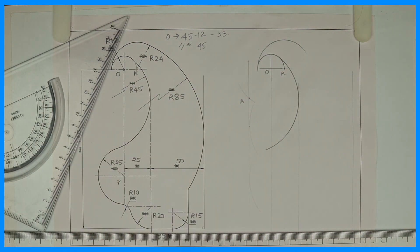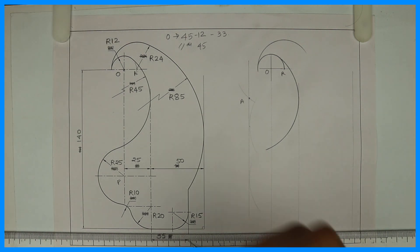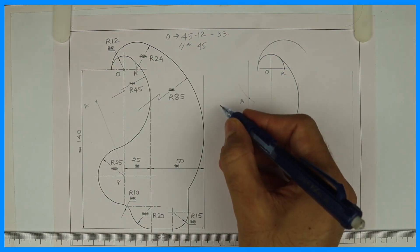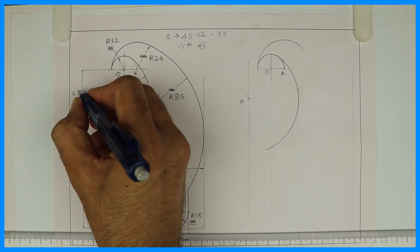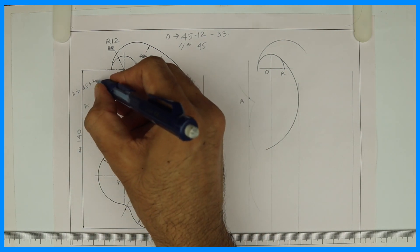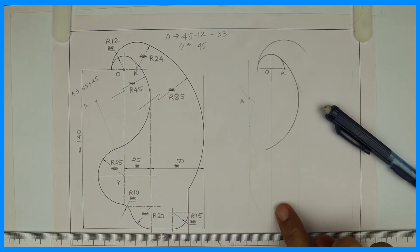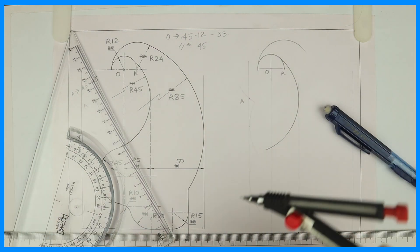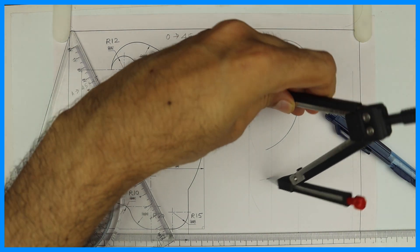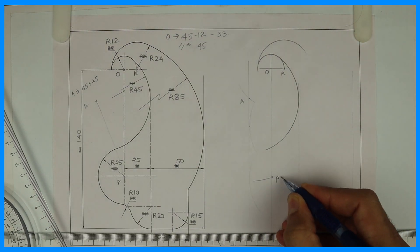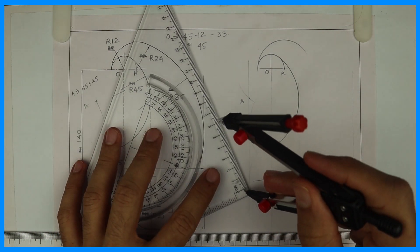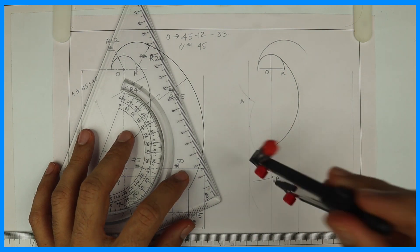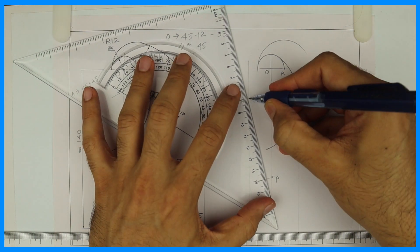Now we need to draw radius 25. Radius 25 is external to radius 45. Let's say this is point A. So from A to point B it would be 45 plus 25, which is 70. From A we'll cut on that line — the one which we drew from O — 45 plus 25 equals 70, so we got point B. From point B we can cut radius 25. Now to find the exact point, I will join A to P.